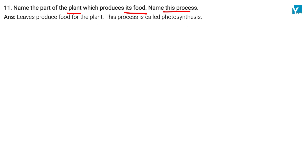In the plants, leaves produce food and the process is called photosynthesis. So leaves produce food for the plant, and this process is called photosynthesis.